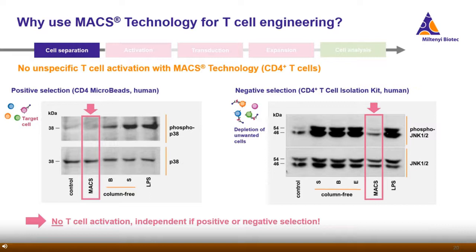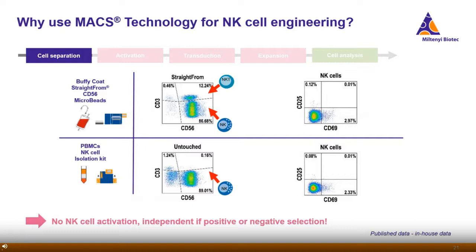If you look at the electron microscopy images comparing a column-free system and ours, you clearly see the bead aggregates on the cell surface when using a column-free system. Whereas cells isolated with MACS technology look very natural. Taking all these benefits into account, it becomes clear why our column-based technology is used in clinical cell therapy trials worldwide. We also did western blot analysis and checked for upregulation of activation markers during the separation procedure of T cells, comparing the column-free system with our technology.